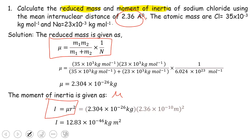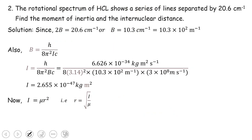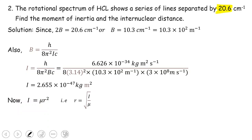Next problem: the rotational spectrum of HCl shows a series of lines separated by 20.6 cm⁻¹. The spacing between two lines is 2B, so 2B = 20.6 cm⁻¹, giving B = 10.3 cm⁻¹. Converting to m⁻¹ gives 10.3×10² m⁻¹. We need to find the moment of inertia I, the reduced mass μ, and the internuclear distance r.